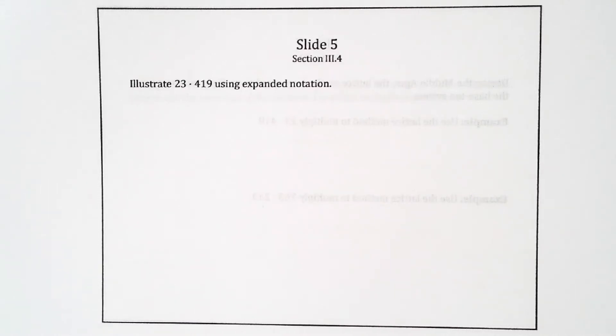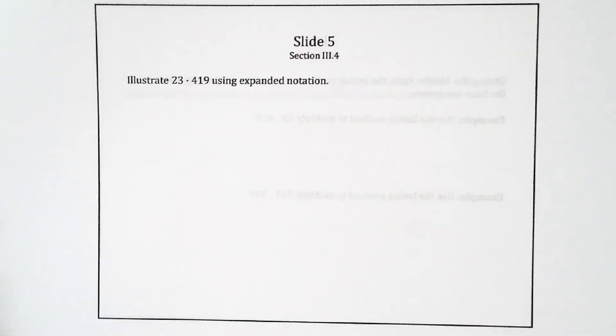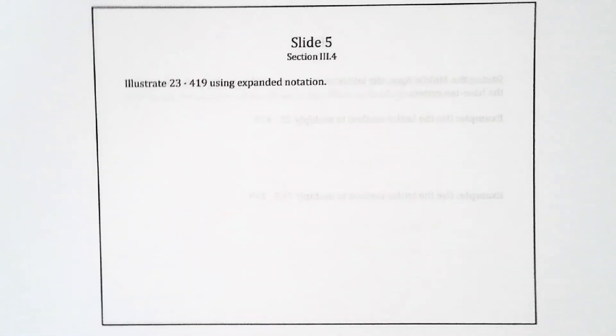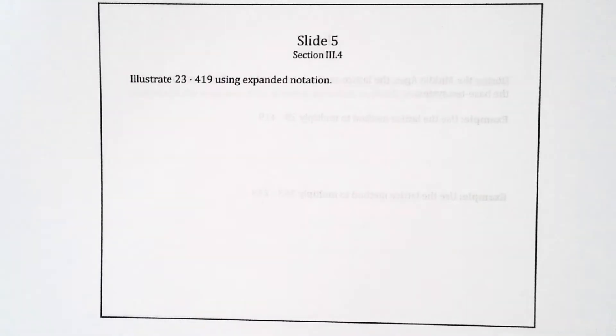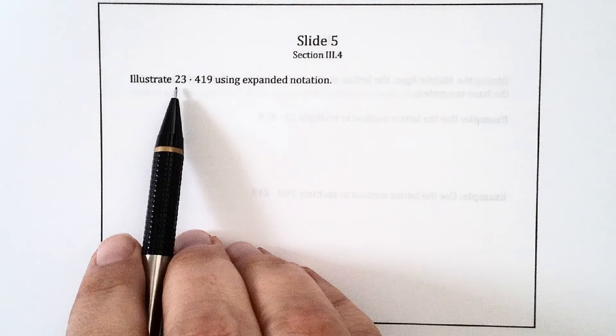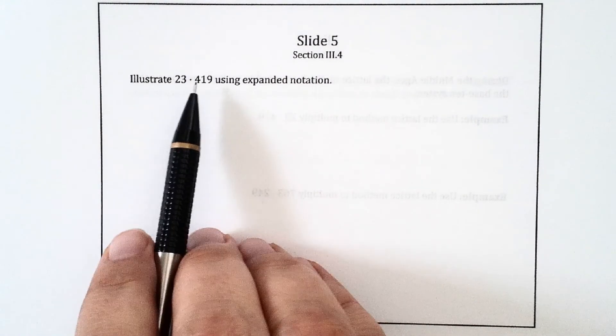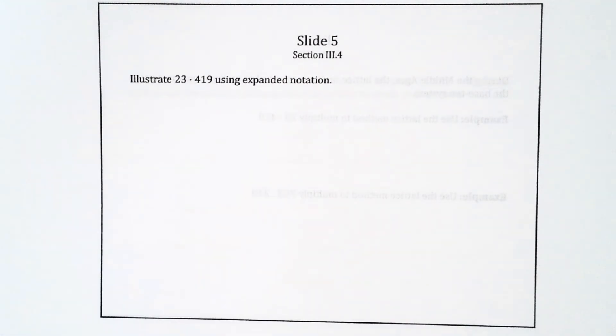This is the second mini-lecture for section 3.3 of the textbook. Now let's illustrate the product of 23 and 419 using expanded notation. For products where you have both numbers more than one digit, it's not really feasible to use math strips and units and place value cards. That's why we're beginning with expanded notation.